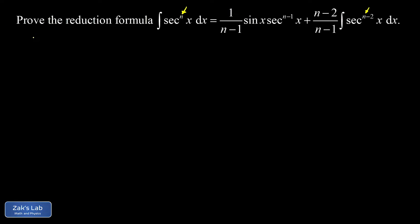We're going to get this done by using integration by parts, but it's not a simple case. It's one of those cases where integration by parts produces a copy of the original integral on the right-hand side, and we have to gather that together with the original integral.